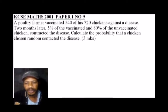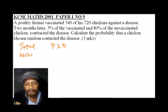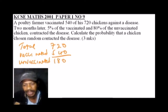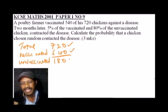Before we do this question, let's have a look at a few numbers that we need to use to be able to solve this. The total number of chickens were 720. Vaccinated were 540, so it means unvaccinated were — if you subtract — you get 180. Those were not vaccinated. We can use the total number to get the number of chickens vaccinated and those which were not vaccinated.